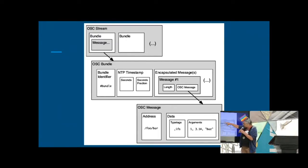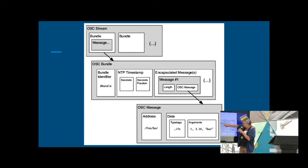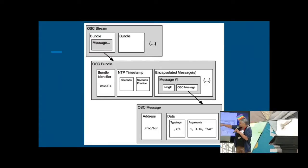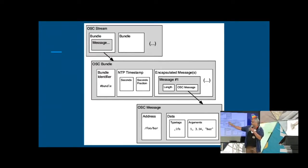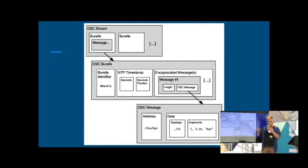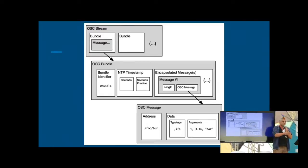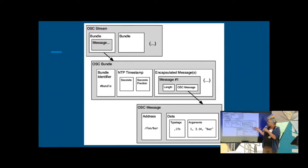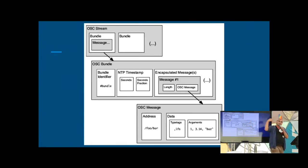These messages can be bundled into an OSC bundle — with the length of the message, the OSC message, and multiple messages encapsulated with a specific high-precision timestamp for each bundle. So even if you have some delay in transmissions that vary from system to system, you can actually compensate for them. This then gets bundled into a stream, which is basically just a stream of bundles — a constant stream of data fed into your different functions on different hardware.